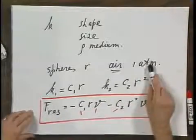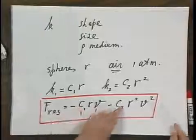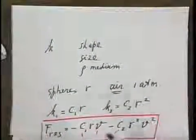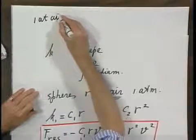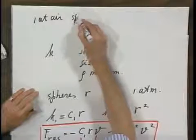And in air, at one atmosphere, these constants C1 and C2 have been measured. So we're dealing here with one atmosphere of air. And I want to remind you that we deal with spheres.